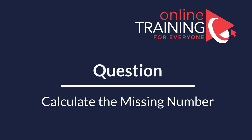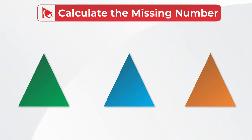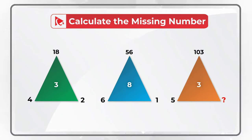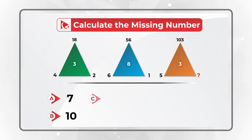Here's a very interesting question to test how quickly and effectively you can solve the challenge. You're presented with three triangles, each having numbers in the corners and a number in the middle. The first triangle has numbers 4, 18, and 2 with 3 in the middle. The second triangle has outside numbers 6, 56, and 1 with 8 in the middle. The third triangle has 3 in the middle and numbers 5 and 103 on the outside, with a missing number in the upper right corner. The choices are: A) 7, B) 10, C) 20, and D) 30.